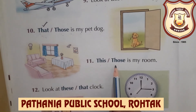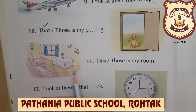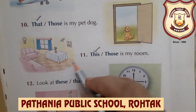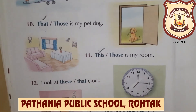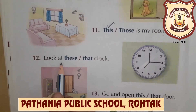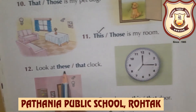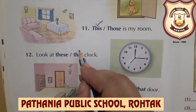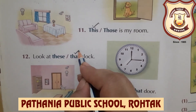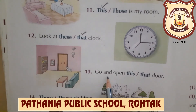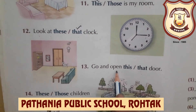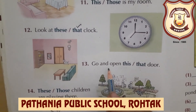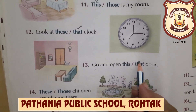This or those is my room — room is single and near, so we use 'this'. This is my room. Look at these or that clock — clock is single and far, so we use 'that'. That clock. Go and open this or that door — the door is far, so: go and open that door.